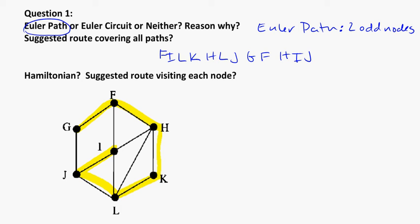Make sure you give your answer here. My Hamiltonian could be G, F, H, K, L, J, I. And there's probably many ways that you can do that with this particular circuit. That's just one of them. So, there will be multiple correct answers.